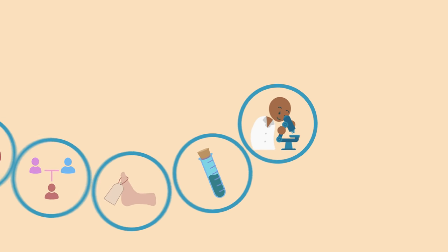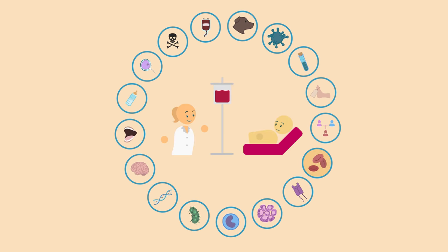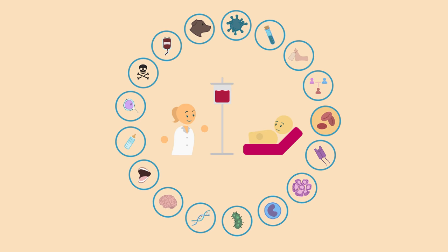People who work in pathology services specialise in particular areas. For example, if you're anemic, a haematologist will find out why.